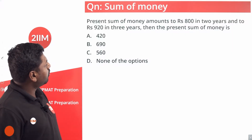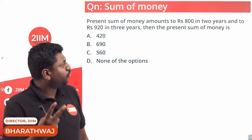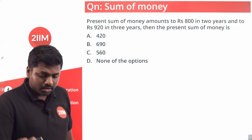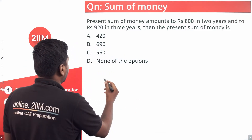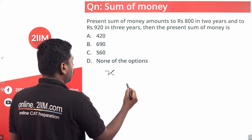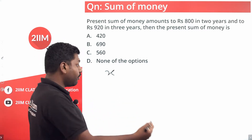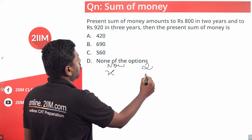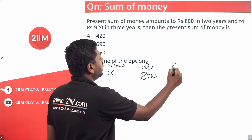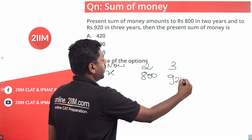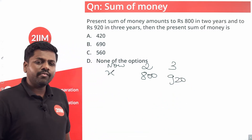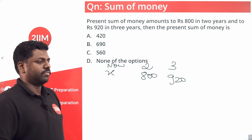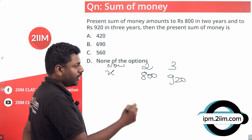A sum of money amounts to 800 in two years and 920 in three years. Find the present sum of money. You have some amount now; at the end of two years you have 800, and at the end of the third year you have 920. It's not given whether it is simple interest or compound interest, but this is on the amount, so we'll get there.